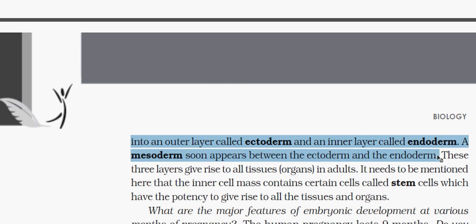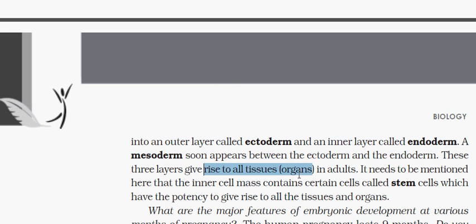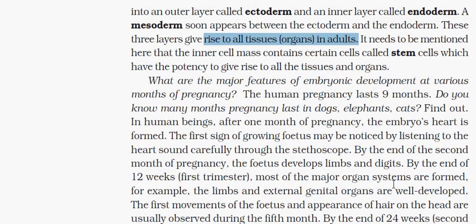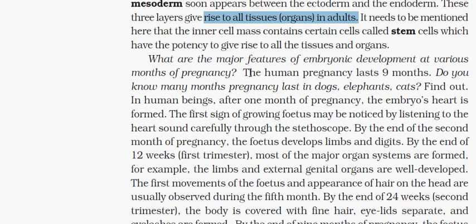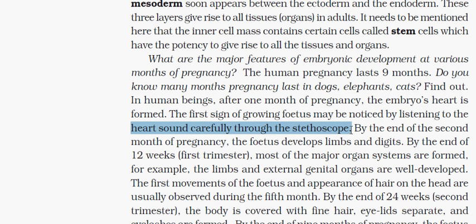In each stage during the nine months of pregnancy: in the first month, the embryo's heart is formed. In the second month, the heart sound can be heard through a stethoscope. After the first trimester, most major organs are formed — for example, limbs and external genital organs.